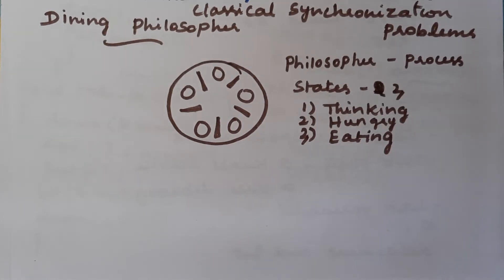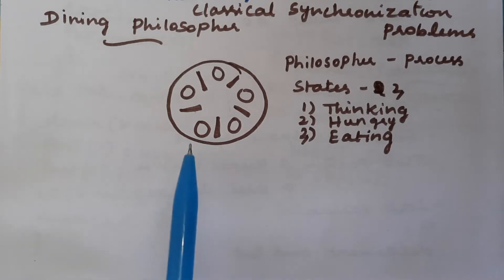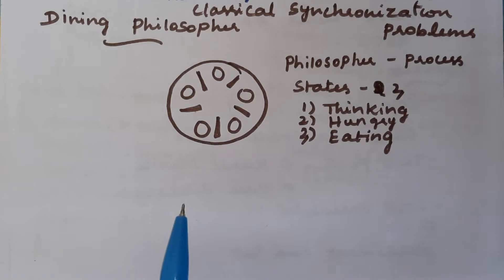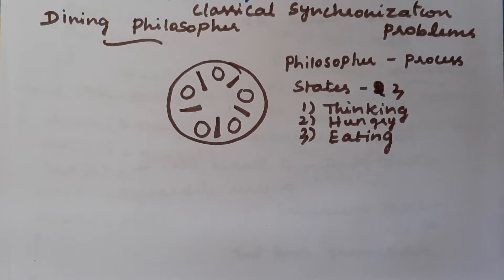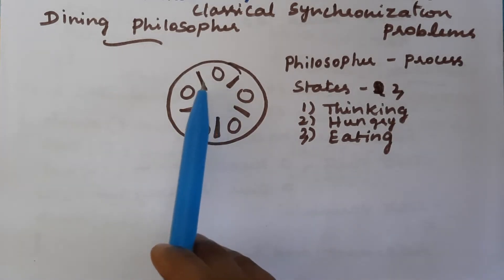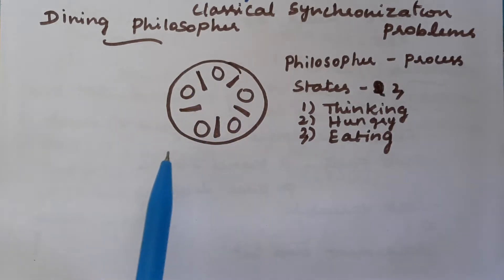The problem consists of five philosophers sitting at a circular table. A philosopher will do only two tasks: they can either eat or they can think. If any philosopher feels hungry, they can use the two forks kept on the left and right side of that philosopher.